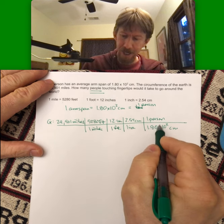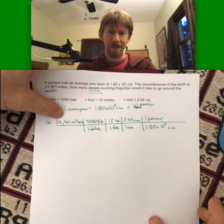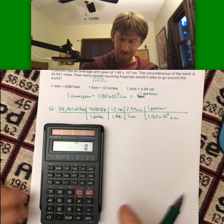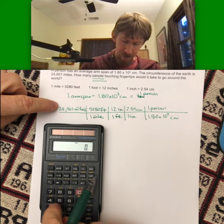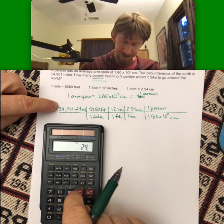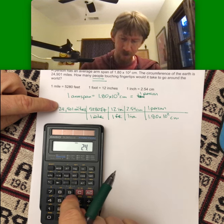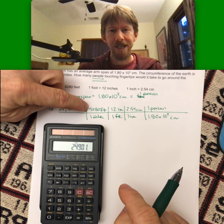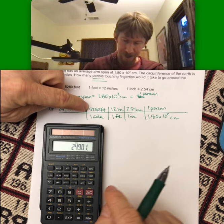With unit conversion problems, it's always multiply all the numbers across the top, divide by any numbers on the bottom. Let me show you what that looks like. Start with 24,901 miles, multiply that times 5,280 feet.